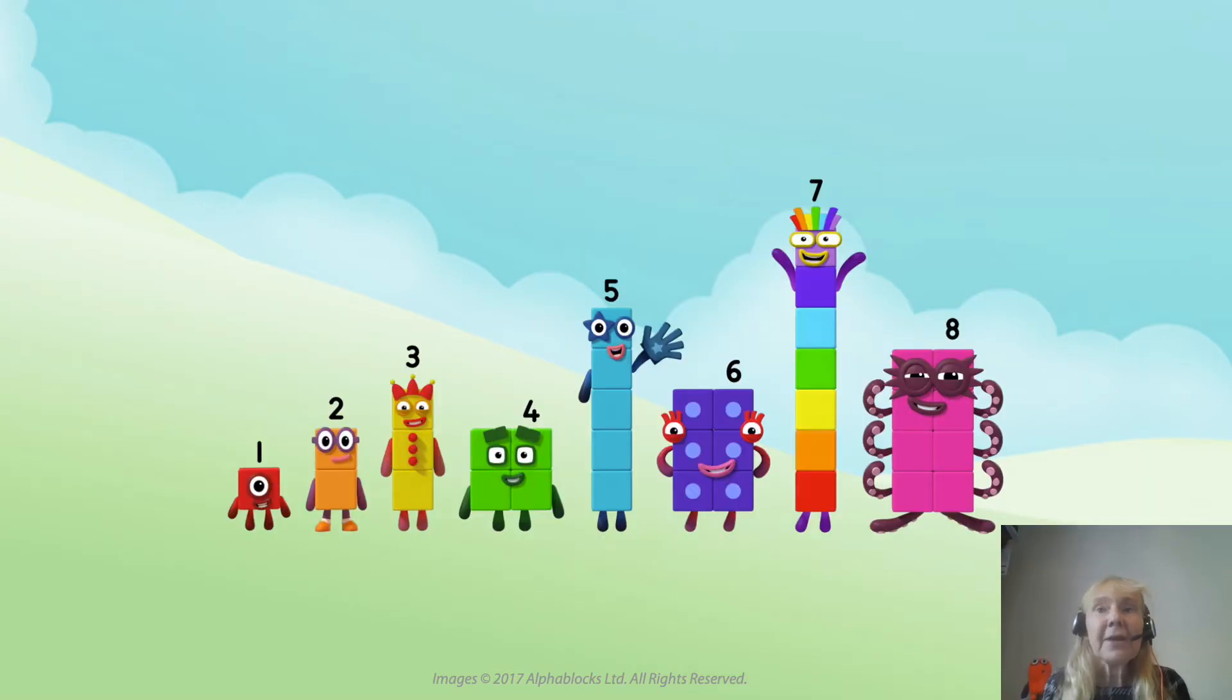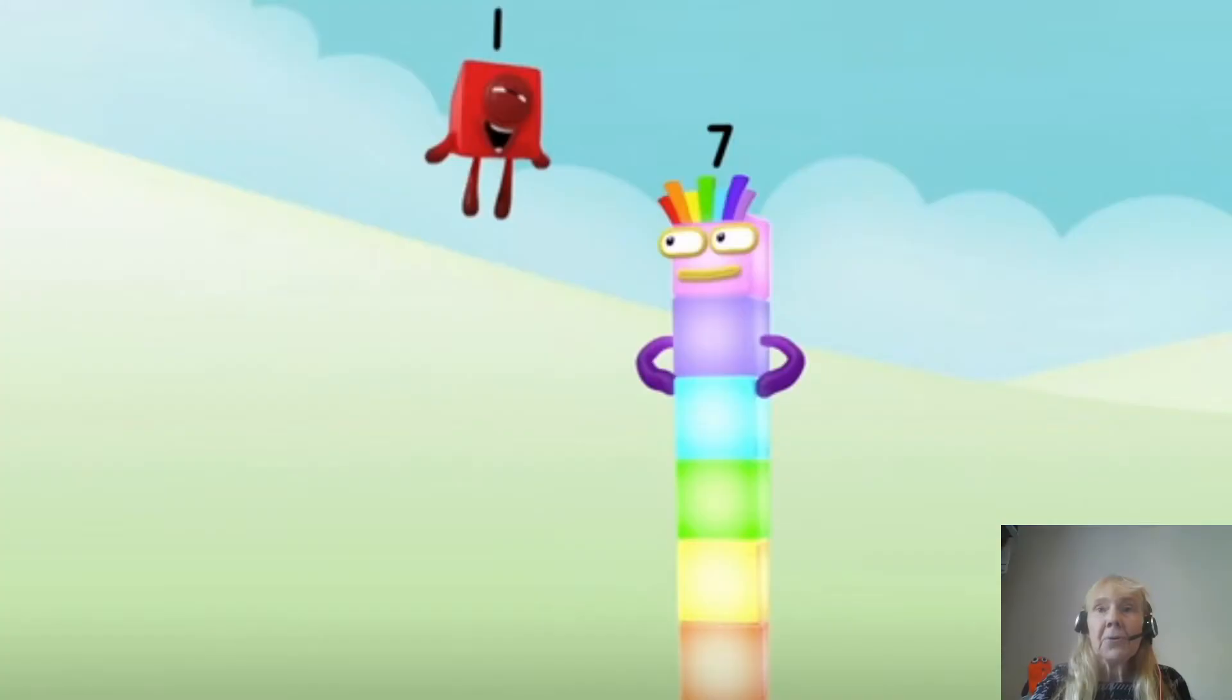Let's just have a think though about Octoblock and the other Numberblocks. Where does he sit? He sits next to seven, doesn't he, when they line up? Because he's one more than seven. Did you notice in the episode when one jumped really high? She jumped so high that she landed on seven. And what happened? Eight appeared. Octoblock appeared.